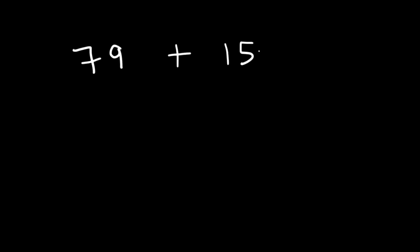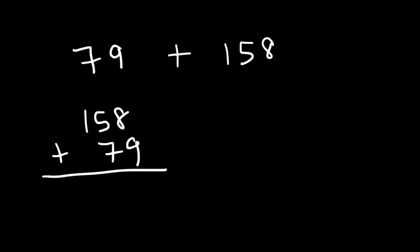Let's try another example: 79 plus 158. First, rewrite it lined up. 8 plus 9 is 17, so we write the 7 and carry over the 1. 1 plus 5 is 6, and 6 plus 7 is 13 — carry over the 1. 1 plus 1 is 2. So 79 plus 158 is 237.